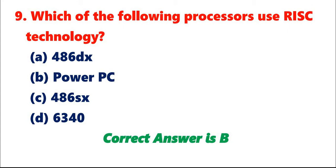Question 9: Which of the following processors use RISC technology? A. 486DX. B. Power PC. C. 486SX. D. 6340. Correct answer is B.